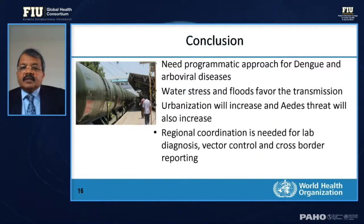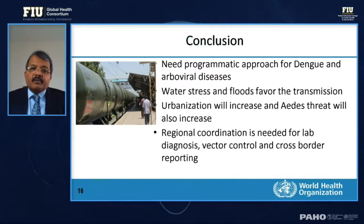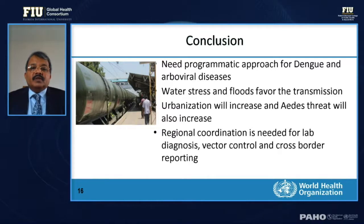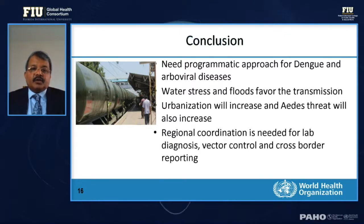To sum up: dengue and arboviruses globally need a programmatic approach. We cannot treat this as an outbreak program anymore — a disease that has been affecting populations since the 1950s and silently expanded to 129 countries is not an outbreak. Dengue is endemic in over 80 countries reporting it every year, and countries must be encouraged to establish proper programs for dengue and arboviruses.